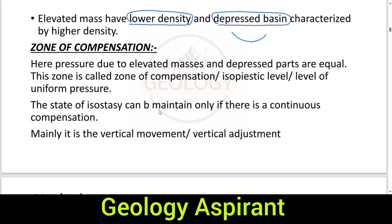Now, the zone of compensation — also called the isopiestic level or level of uniform pressure — all these terms refer to the same concept from different points of view. At this zone, the pressure due to the elevated masses and the depressed parts are equal.